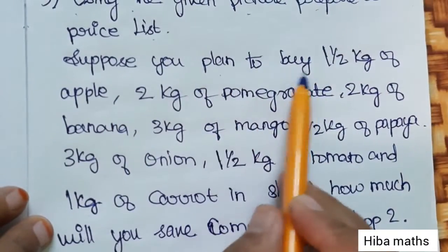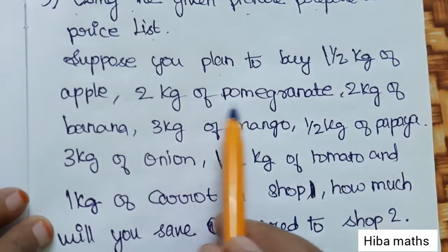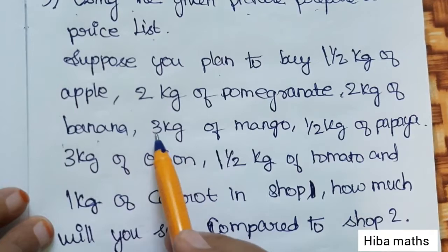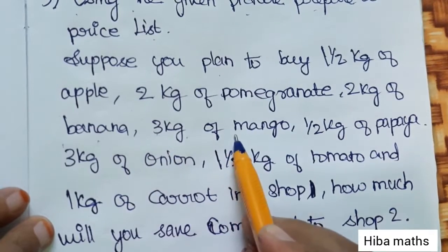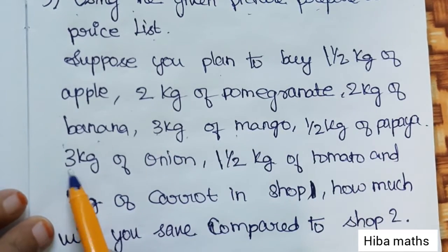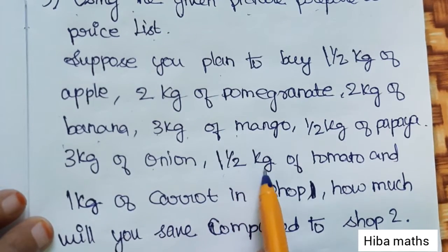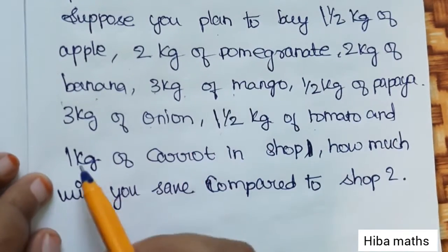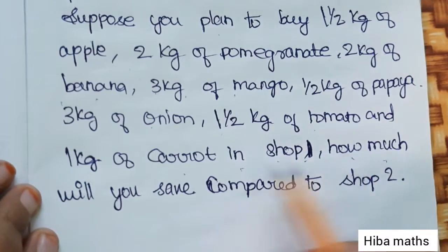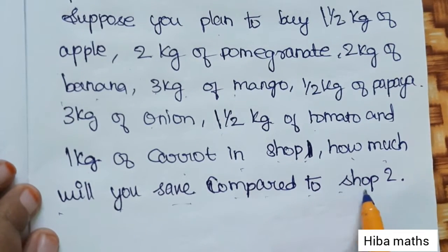Suppose you plan to buy 1.5 kg of apple, 2 kg of pomegranate, 2 kg of banana, 3 kg of mango, 1.5 kg of papaya, 3 kg of onion, 1.5 kg of tomato, and 1 kg of carrot in shop 1. How much will you save compared to shop 2?